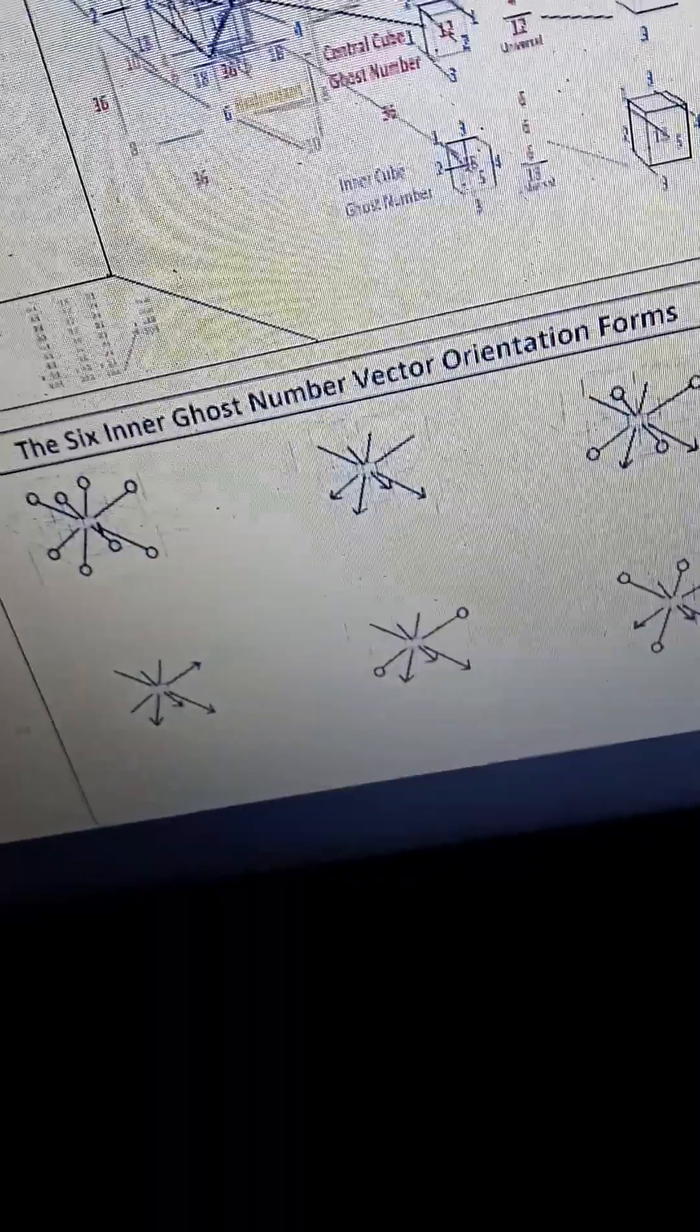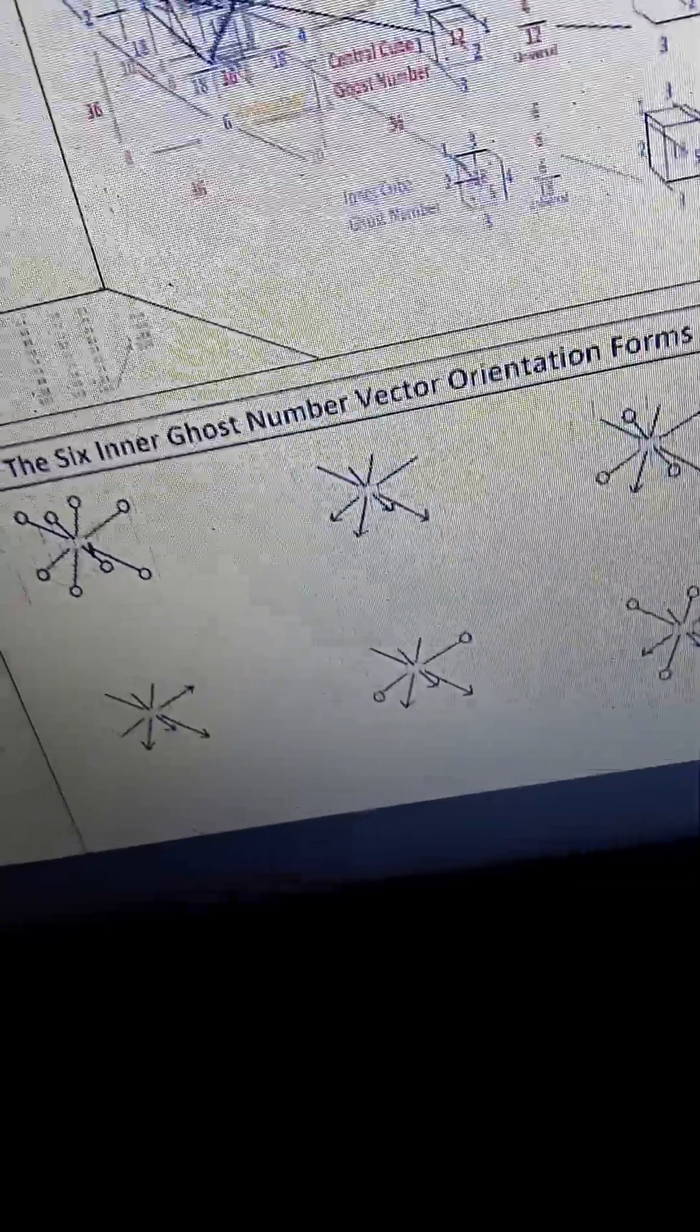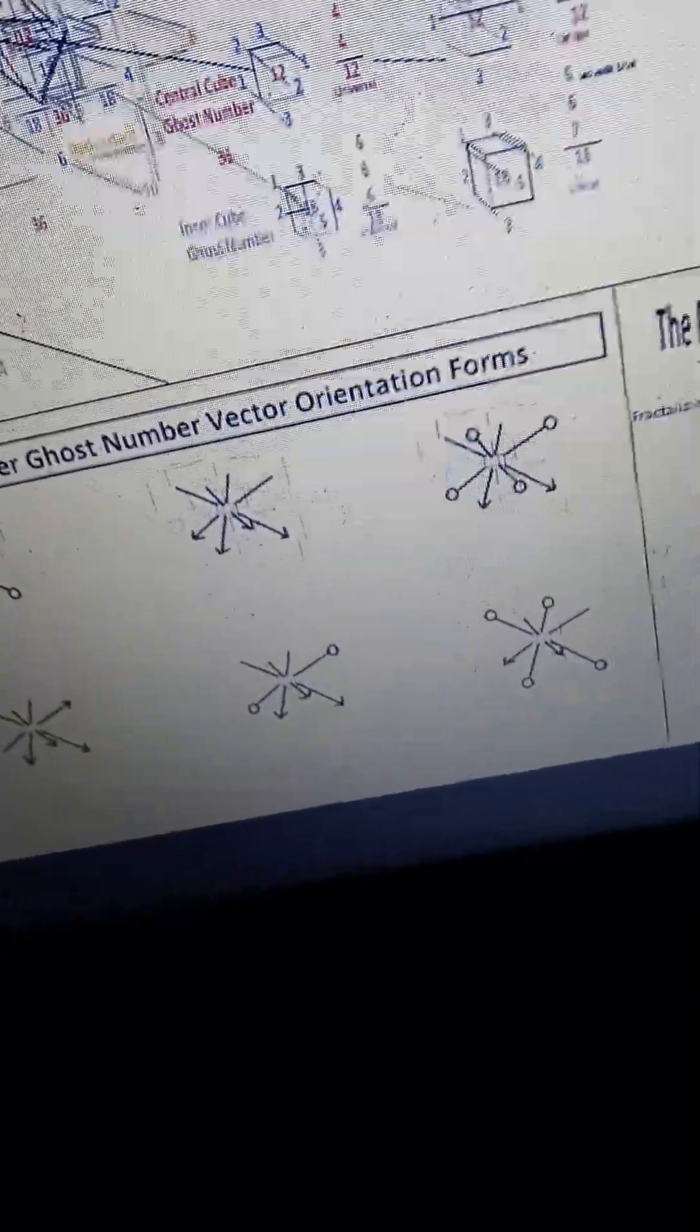These are the six inner ghost number vector orientation forms that has derived from a catalog of all the types of possible magic ghost number cube forms.